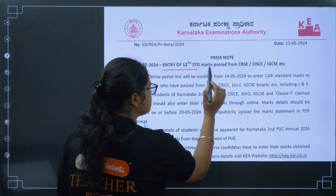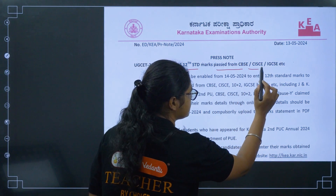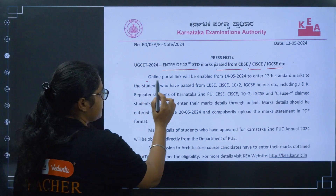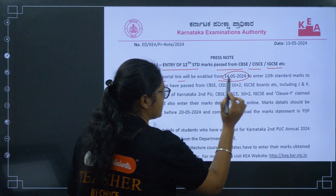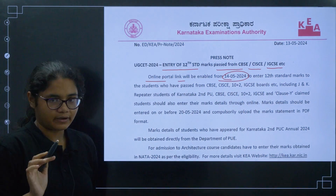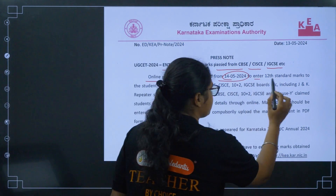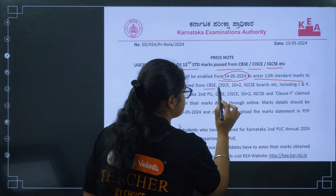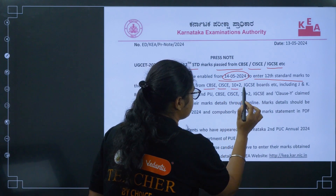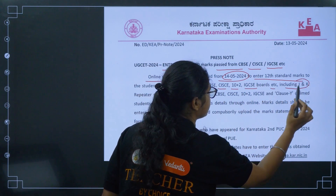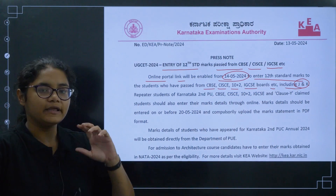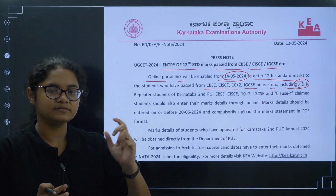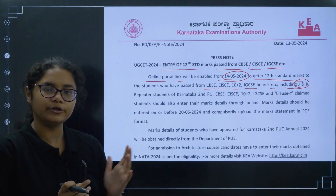The notice states that an online portal link will be enabled from 14th of May 2024 to allow students who have passed from CBSE, CISCE, 10+2 IGCSE, etc., including those from Jammu and Kashmir, to enter their 12th standard marks. You have to enter or upload your marks through this portal.